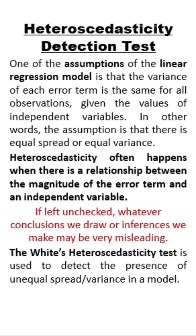One of the assumptions of the linear regression model is that the variance of each error term is the same for all observations, given the values of independent variables. In other words, the assumption is that there is equal spread or equal variance. Heteroscedasticity often occurs when there is a relationship between the magnitude of the error term and an independent variable.